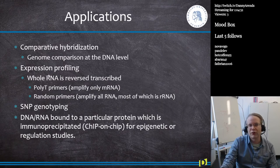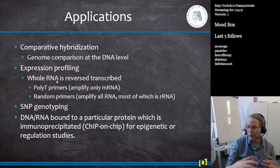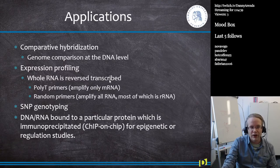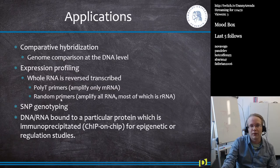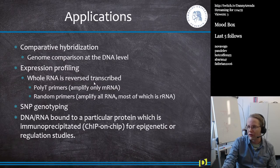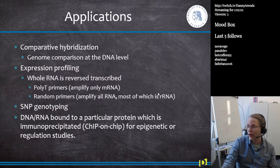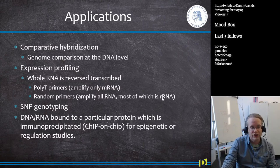They are mostly used for expression profiling. What we do is take whole messenger RNA, reverse transcribe it, and we can do this in two ways: using poly-T primers with reverse transcriptase, which means we amplify only messenger RNA, or we can use random primers. If we use random primers in the reverse transcriptase step, we amplify all RNA — and most of these will be ribosomal RNA, since ribosomal RNA is the most abundant type of RNA in a sample.